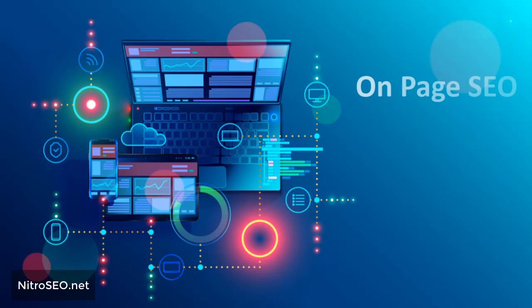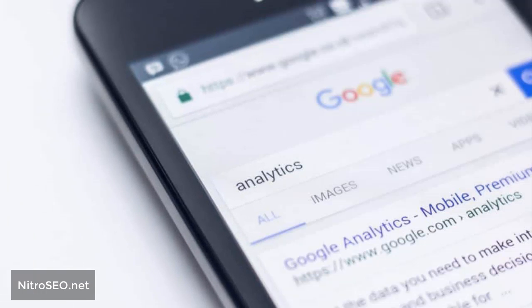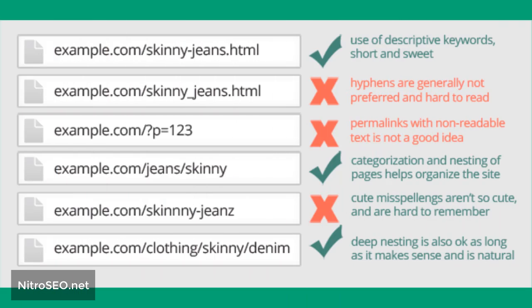On-page SEO internal checklist: conduct keyword research. Find the phrases that users search on Google and have a good SEO strategy for each of them. Choose a keyword for each page of your site. You do not need to start with the most competitive words — start with words that are less searched and less competitive. Use keywords in the URL of pages, as this is one of Google's criteria for ranking sites. Avoid excessive use of words in the URL that makes it longer; your URL should be short.